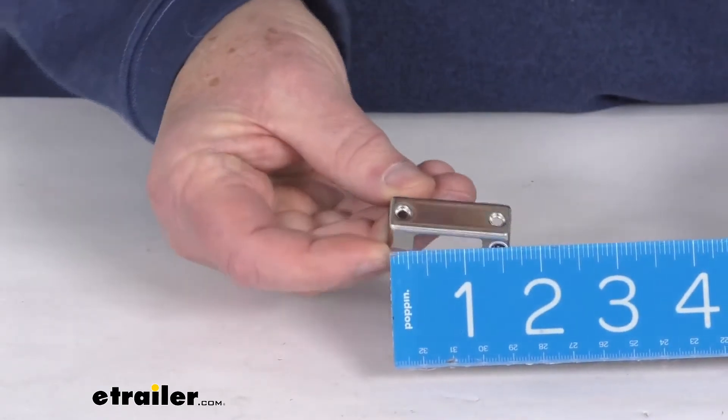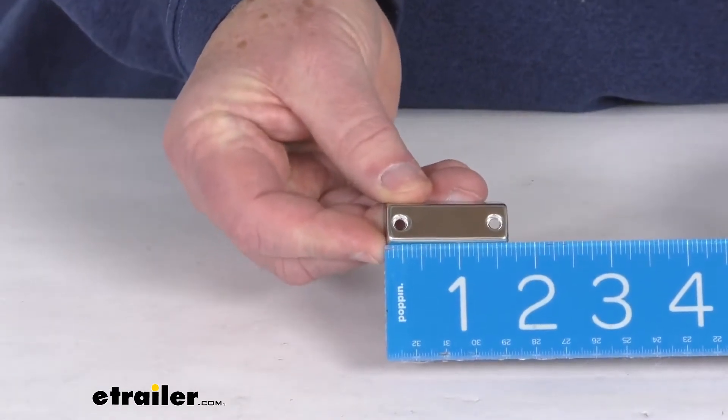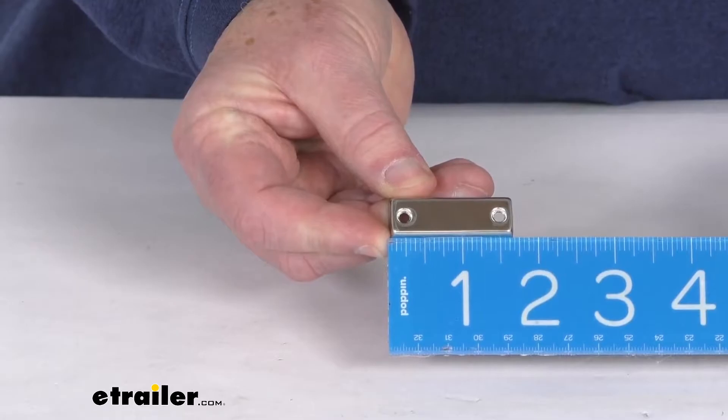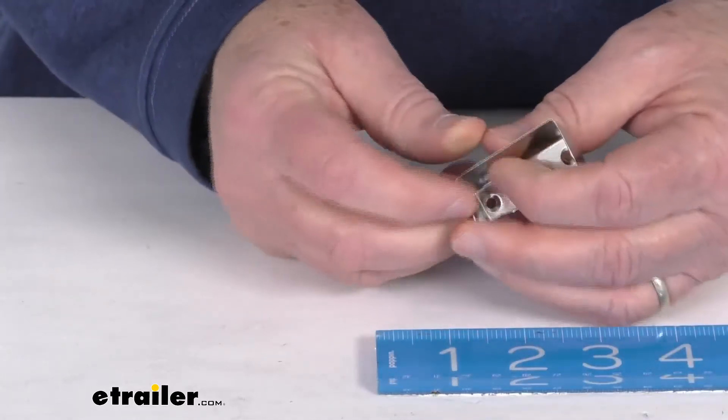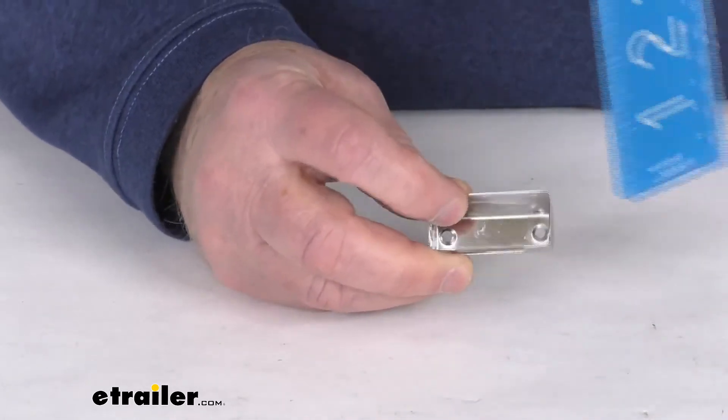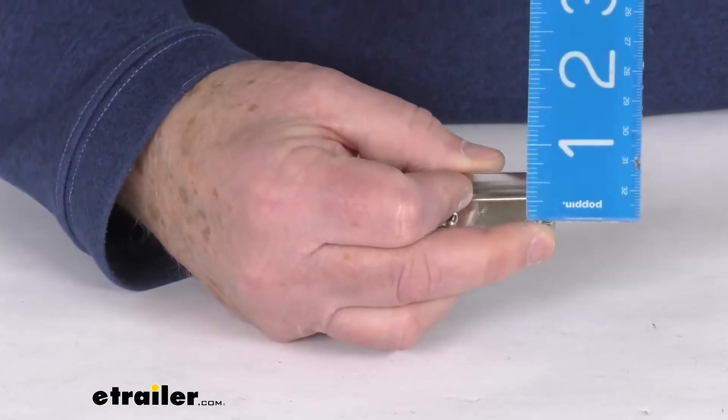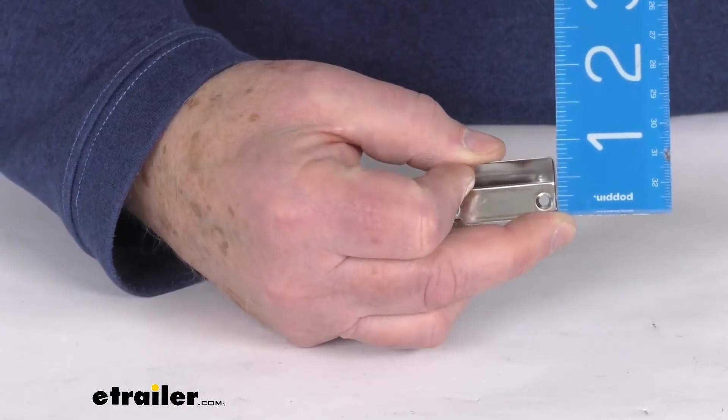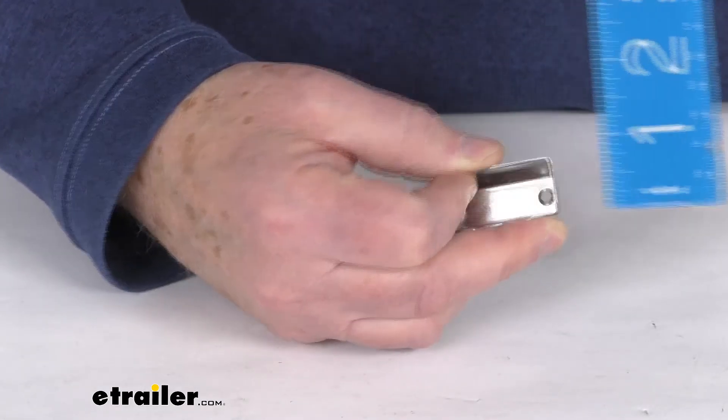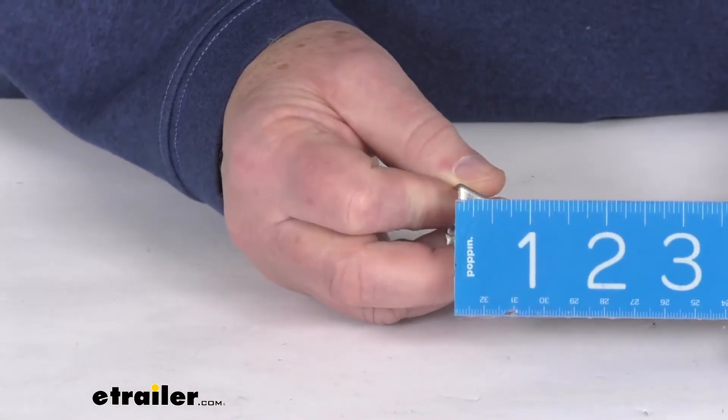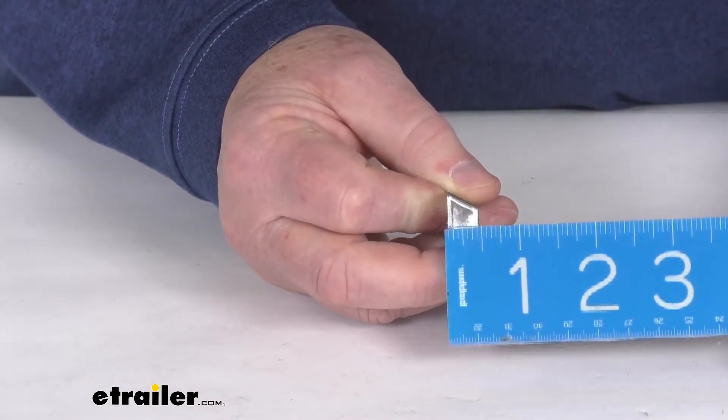So if we do the width of this one into the other, it's right at one and five-eighths inches wide. The total height on this is going to be right at about three-quarters of an inch tall and the total depth on it is right at a half-inch deep.